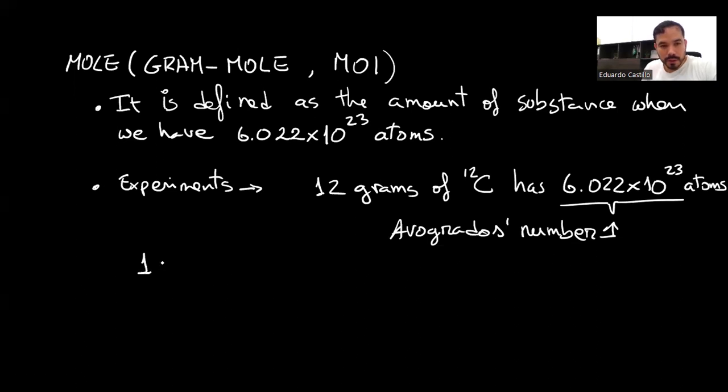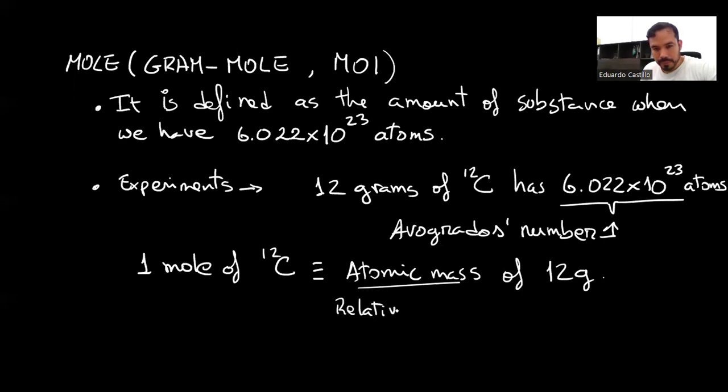And this means that one mole of carbon-12 has an atomic mass of 12 grams. This atomic mass can also be called relative atomic mass. Sometimes it is also called molar mass or atomic weight. These are different ways to refer to the atomic mass.